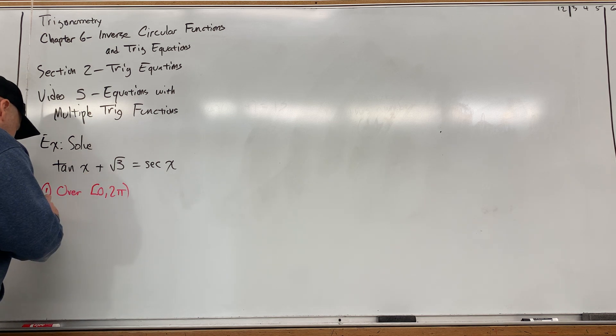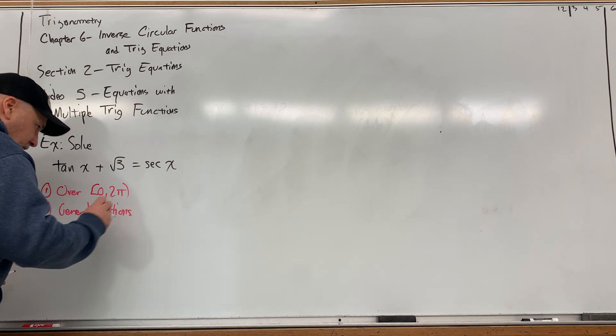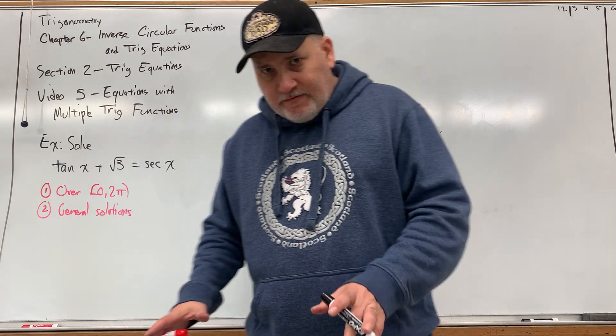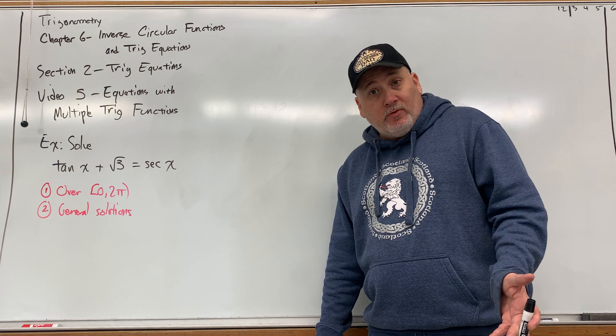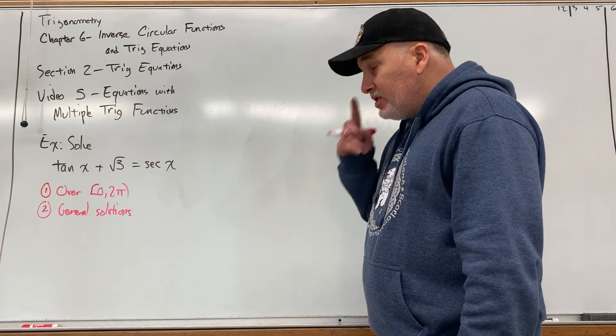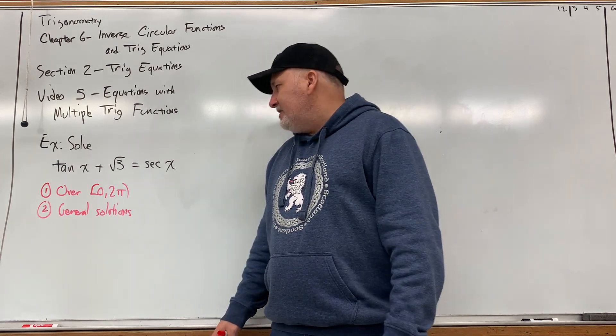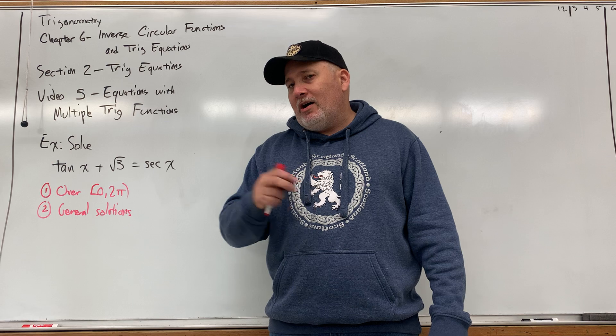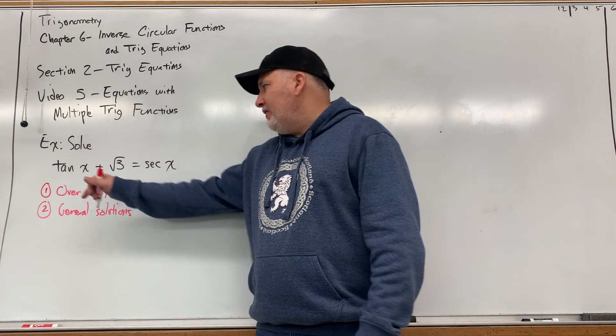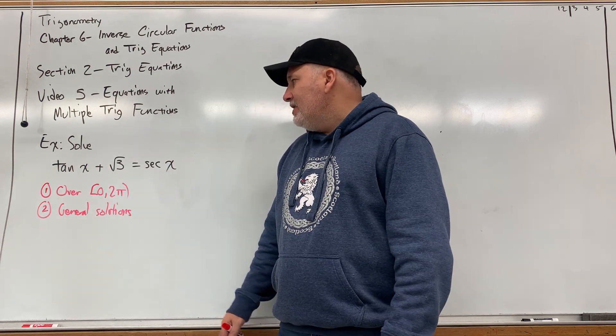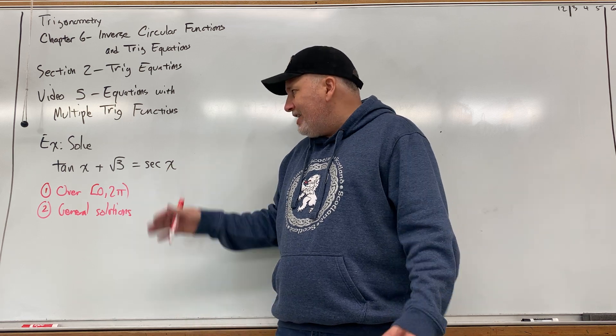But that's the least of our worries. Figuring out the interval over which to find our solutions is just a matter of finding the largest interval that contains all periods, which would be the one for secant since it has the larger period of 2 pi. But the bigger issue that we're facing is that this equation has two different trig functions. Now unlike the previous one where we got it equal to zero and factored, that's not really an option here because if we put everything on one side, none of these three terms have any common factors. So there's not going to be any factor that will get the job done.